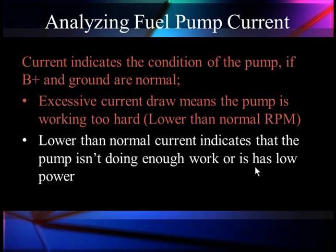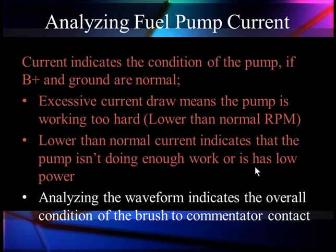Lower than normal current indicates the pump isn't doing enough work or it has low power. If I have low voltage, my pump will run too slow — low voltage because I've got a voltage drop somewhere in the wiring or maybe in the inertia switch. Pump current is going to give us a lot of indication, and by analyzing the waveform, we can get the overall condition of the brushes and commutator contacts.